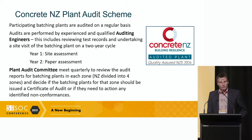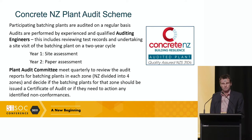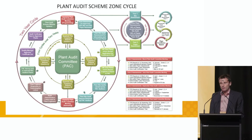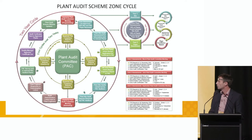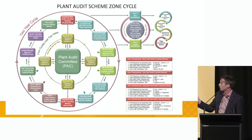On the back of the submitted reports, the plant audit committee meets quarterly to review audit reports for batching plants in each zone. New Zealand is divided into four zones for administration purposes, roughly 40 to 45 plants per zone. They go through a process of deciding if the batching plants for that zone should be issued a certificate of audit as per NZS 3104, or if they need to action any identified non-conformances. The two-yearly cycle shows a constant process of submitting records, going through an assessment, and then meetings of the plant audit committee — there's a clear structure and logic.